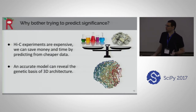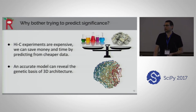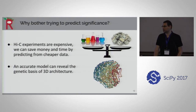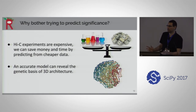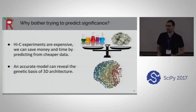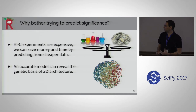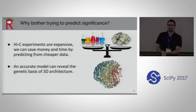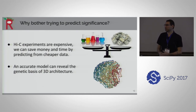Why bother trying to do this? There are two reasons. First, HI-C experiments are incredibly expensive — they increase in cost quadratically with resolution, which makes sense because you're predicting a square contact map. Most contact maps are currently at 40 or 100 KB resolution, but we want to do this at 1 KB resolution, which is around the size of a gene or functional element. Only one contact map has been done at 1 KB resolution because it requires so much time and money. Second, a model that accurately predicts significant contacts would reveal the genetic basis of 3D structure and identify cell-type-specific components.